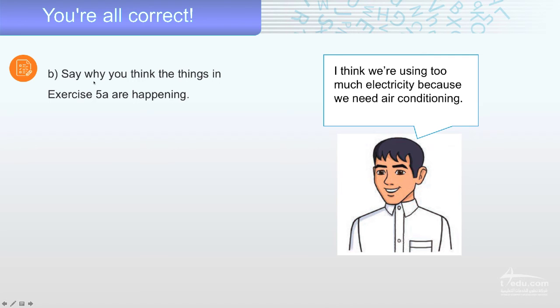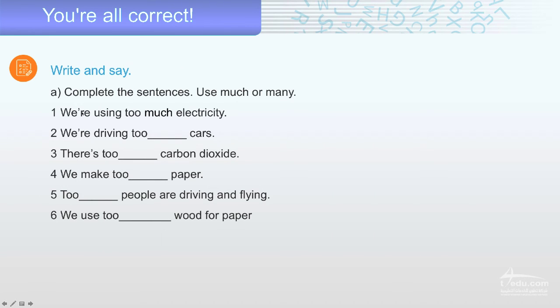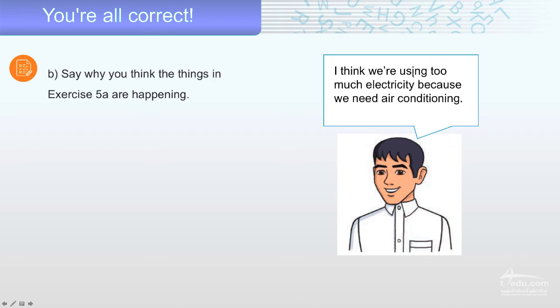Now, say why you think that things in exercise 5A are happening. Let's go back. This is 5A. We are using too much electricity. He thinks what? I think we are using too much electricity because we need air conditioning. What do you think?